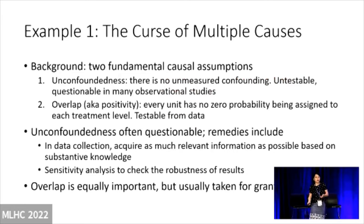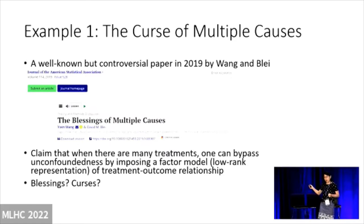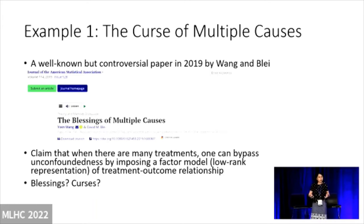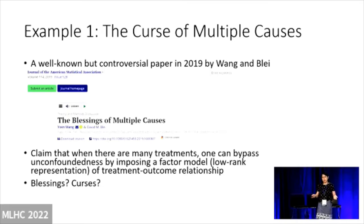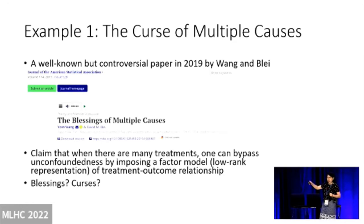So I'll give two examples, both pretty famous papers. The first example I call the Curse of Multiple Causes. This is based on a well-known but controversial 2019 paper by Wang and Blei — Dave Blei of course is a very famous person in machine learning. This is a JASA discussion paper. JASA is the top journal in statistics. It's very impactful.